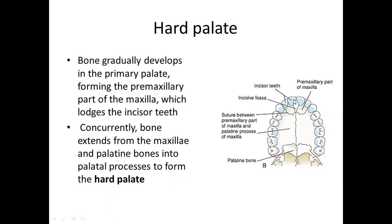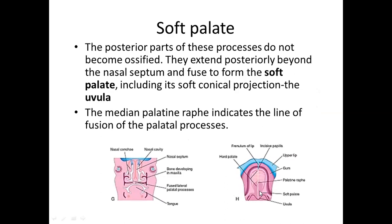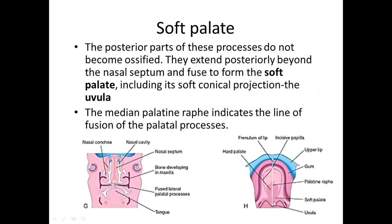The secondary palate differentiates into hard and soft palate along the line of fusion between the two palatine shelves, known as the palatine raphe. The anterior three-fourths of the secondary palate is invaded by osteoblast cells, so bone gradually develops into the pre-maxillary component of the maxilla, the palatine process of the maxilla, and the palatine bones. The posterior one-third is invaded by myogenic cells, converting it into the soft palate and the uvula. The median palatine raphe indicates the line of fusion between the two palatal processes.